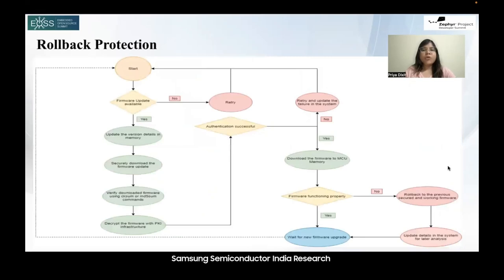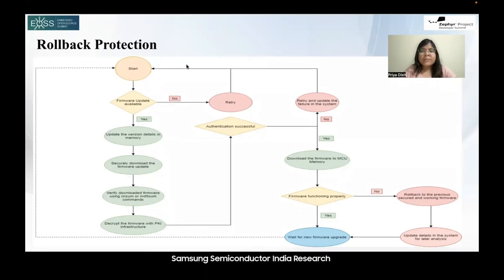Let us now talk about rollback protection and the advantages it offers. Rollback protection is used to perform upgrades in a fault-tolerant manner and to recover the system if a bad firmware image is installed. This is an essential security feature provided by Zephyr RTOS to ensure that once the device has been upgraded to a specific version, it cannot be reverted to the previous — less secure — version. Zephyr RTOS implements rollback protection via MCU boot, which includes a firmware image storage mechanism. We maintain the record of the firmware image versions installed, along with their associated metadata. When performing a firmware upgrade, MCU boot checks the version and metadata of the currently installed firmware. If the incoming firmware image is older or has less secure metadata, that update is rejected, preventing the rollback.